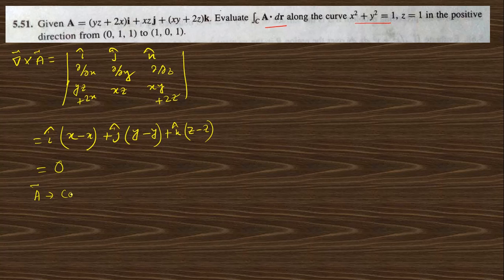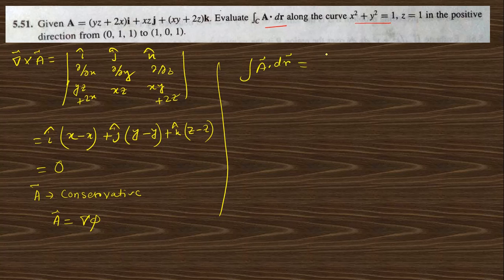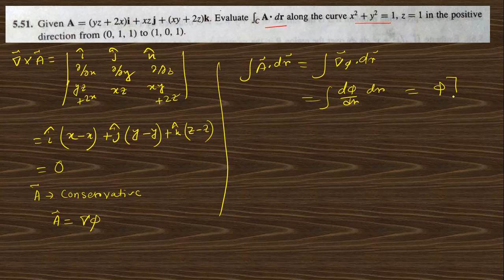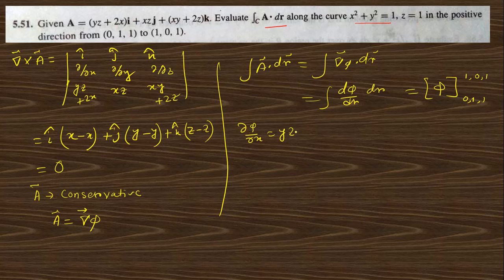So A is conservative. Since A is conservative, we can write A as grad phi. Therefore the integral of A dot dr is nothing but the integral of grad phi dot dr, which equals phi evaluated at the limits. The upper limit is (1, 0, 1) and the lower limit is (0, 1, 1). We need to find phi by comparing components: del phi/del x = yz + 2x.